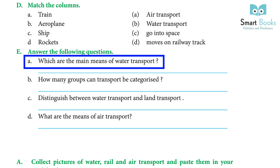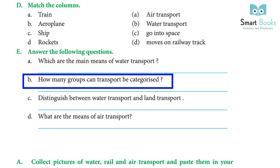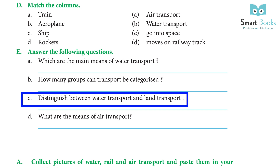Exercise E — Answer the following questions. (a) Which are the main means of water transport? Answer: The main means of water transport are boat, ship, cruise, and liner. (b) How many groups can transport be categorized into? Answer: Transport can be categorized into three groups — water, land, and air transport. (c) Distinguish between water transport and land transport. Answer: Water transport refers to the movement of vehicles on water, for example, the ship. Land transport refers to vehicles that move on land, for example, the bus.